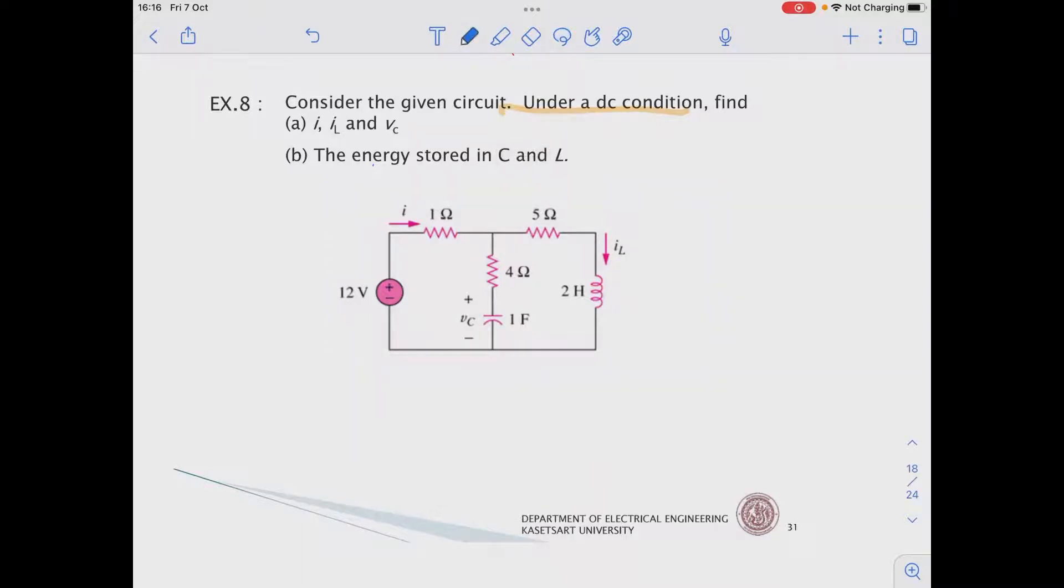And the question first asks you to compute current IL and then VC. So we need to solve for the current passing through this 1 ohm, voltage across C and current passing through this branch, and the energy stored in C and L.